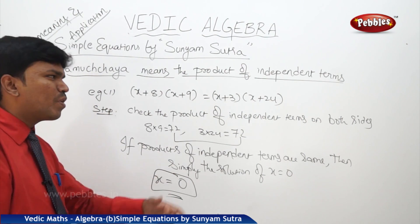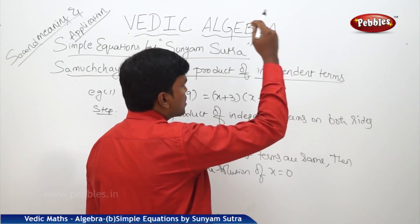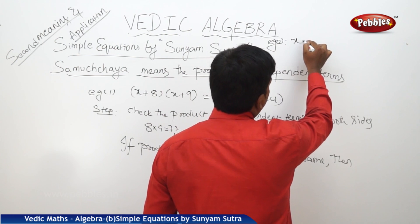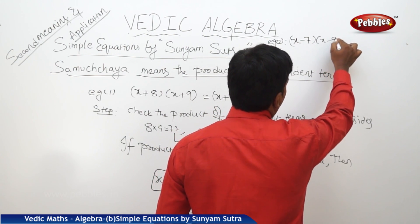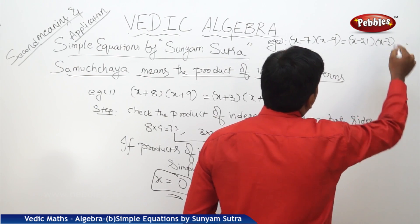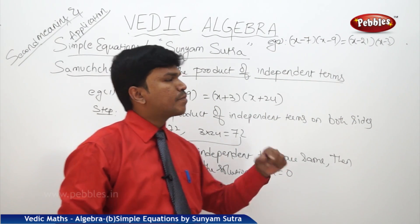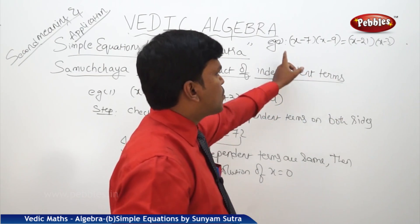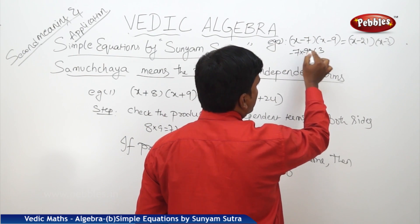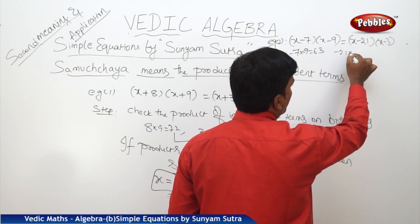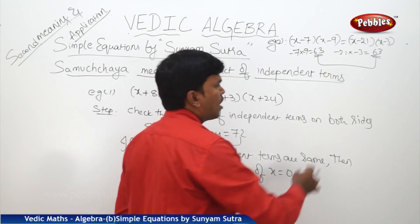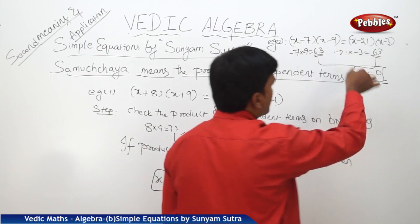Similarly, let us take one more example. Consider: (x − 7)(x − 9) = (x − 21)(x − 3). Just observe the product of independent terms on both sides. Here, (−7)(−9) = 63 and (−21)(−3) = 63. Both products are the same. Hence, the solution is x = 0 for this problem.